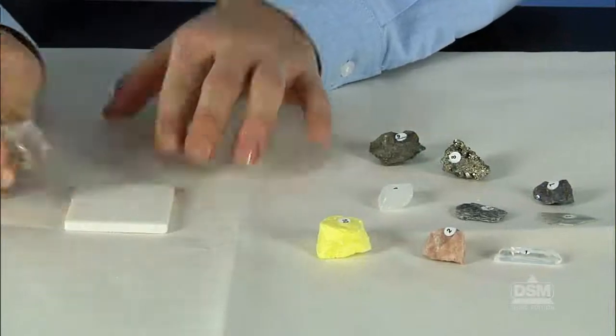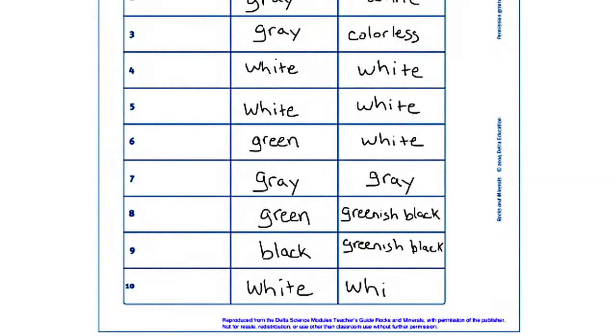Next, instruct students to test their specimens on the streak plate and to record their observations on the activity sheet. The streak colors of the minerals are as follows.